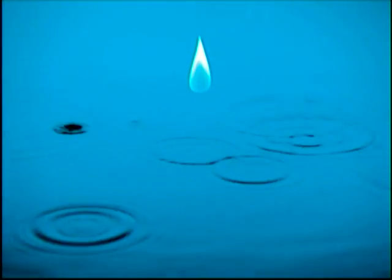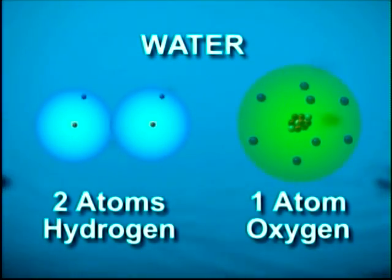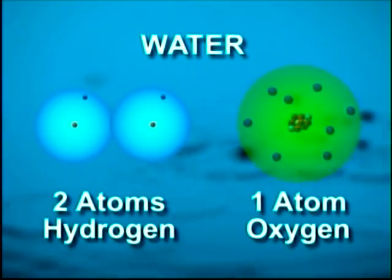If a drop of water were broken down into its basic elements, there would be two atoms of hydrogen and one atom of oxygen.